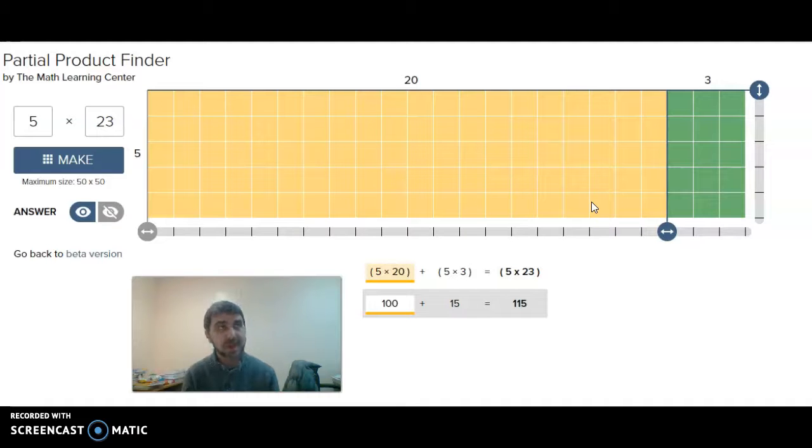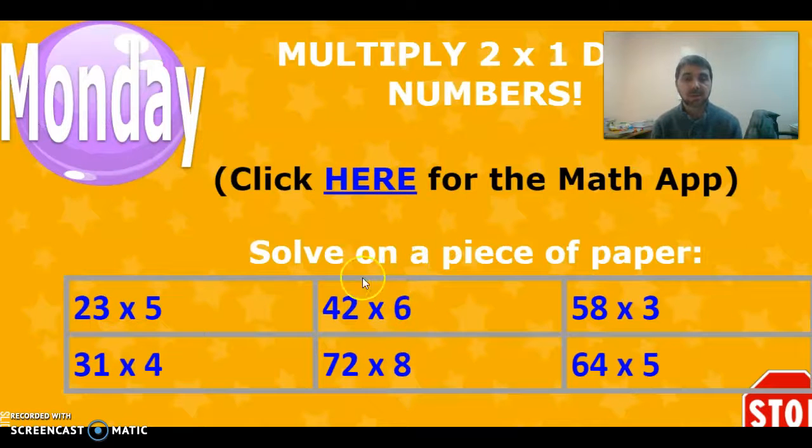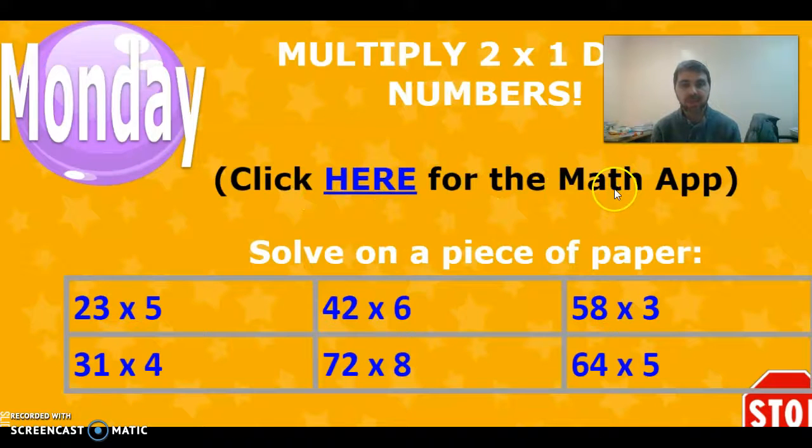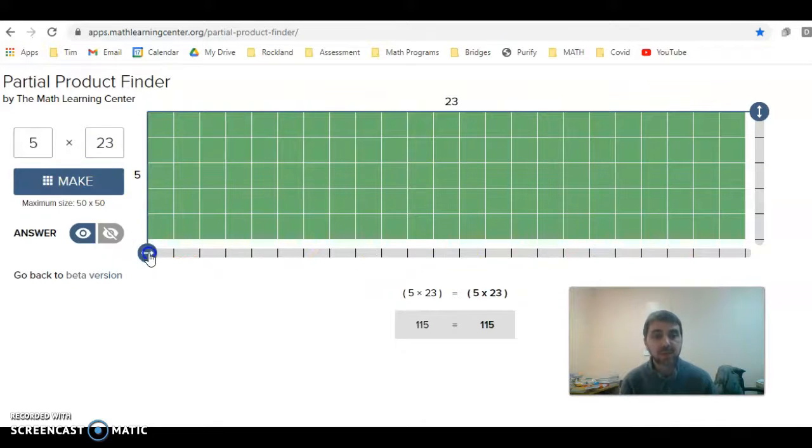All right. So, let's do a problem. On the next slide, you've got some problems to work on. So, here's how you can use this and what you've learned to solve the problems. So, your slide is going to look like this. It's going to say multiply 2 by 1 digit numbers. Here is where you can click for the math app that I'm showing you. And these are the 6 problems you're going to solve. The first one is the one we're working on right now, which is 23 times 5. So, you can certainly use the math app to help you with this. So, in this case, you would put in 5 times 23 and you would get, it would look like this. And then you need to actually slide it to where it breaks it up using expanded notation. So, in this case, it would be 20 and 3.